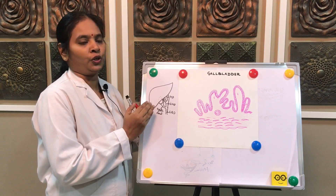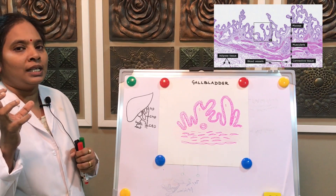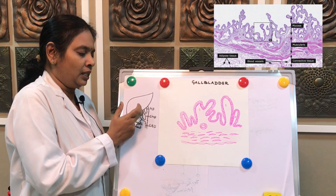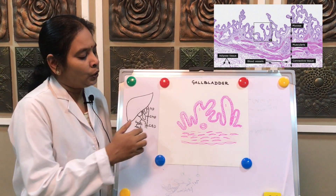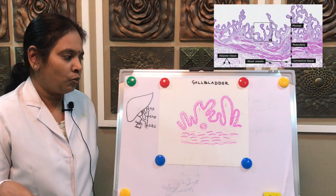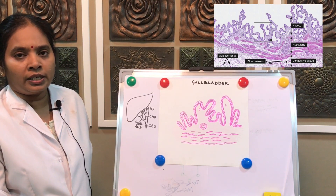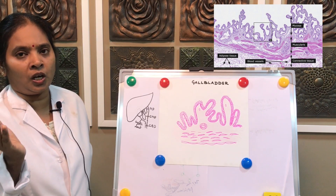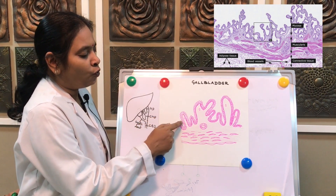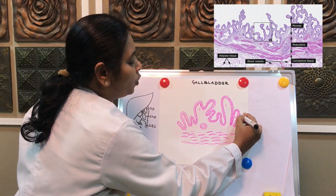Now let's look at the histology of the gallbladder — the internal features. The gallbladder is a muscular sac situated at the under surface of the liver. Unlike the GI tract which has four layers — mucosa, submucosa, muscularis externa, and serosa — the gallbladder consists of only three layers.